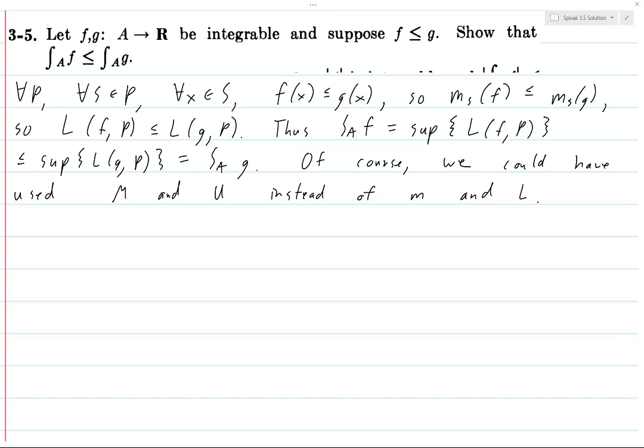And so then you have the integral over A of F is equal to the infimum of U(F,P) which is less than or equal to the infimum of U(G,P) which is precisely equal to the integral over A of G.